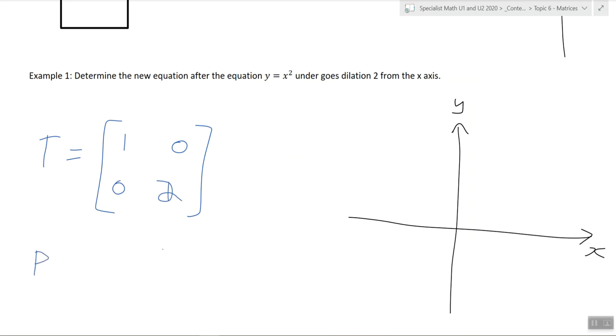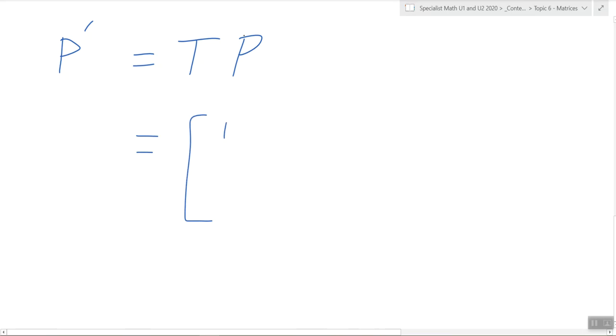Let's call this the new function or the image. We're going to multiply the transformation times the original function, P. We've got 1, 0, 0, 2. This is the transformation matrix times by P.